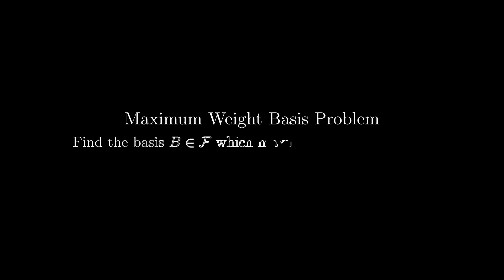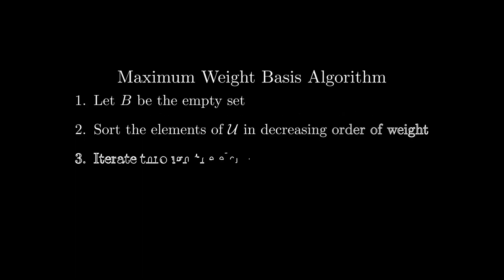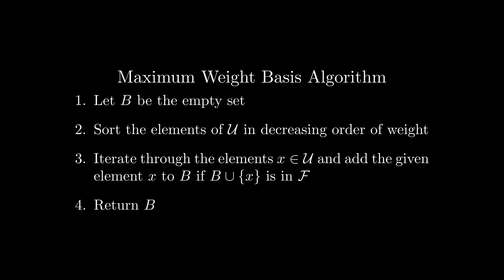Given this weighting function, one problem we may wish to solve could be finding a basis which maximizes the total weight of all its elements. This is known as the maximum weight matroid basis problem, and it can be solved using the following algorithm. First, we define b to be the empty set. We then sort the elements of u in decreasing order of weight. We then iterate through the elements x of u and add the given element x to b if b union x is in f. Lastly, after all this is done, we return b.